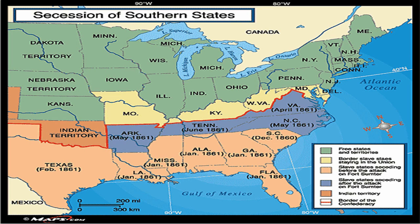First, as you can see by the map, the first group are the states that seceded before the attack on Fort Sumter in April of 1861. These states include South Carolina, Mississippi, Alabama, Georgia, Florida, Louisiana, and Texas. All of these came together and formed the Confederate States of America.